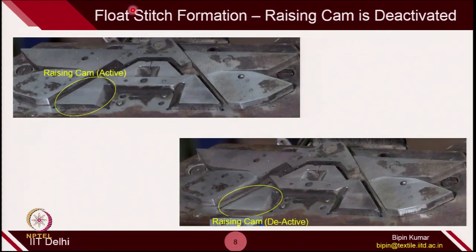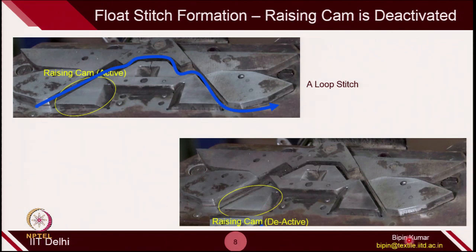In case of float stitch, this is the rising cam. When the rising cam is in active position, it hits the needle butt and the path will produce a loop stitch. When the rising cam is in deactivated position — suppressed inside the cam platform — the needle will not rise. The butt simply moves in a straight line, the needle remains idle on the bed, and it makes a float stitch.